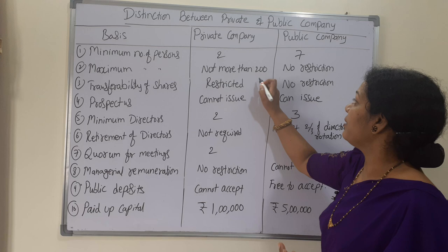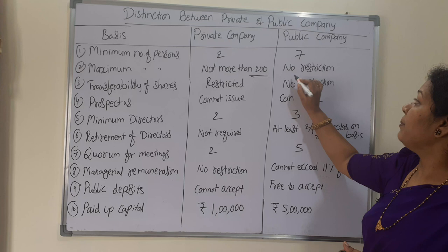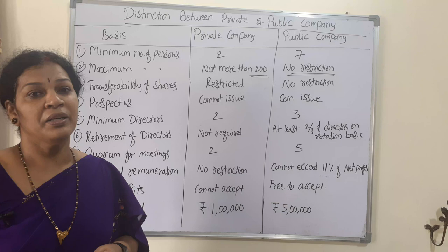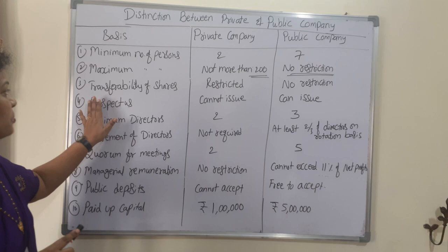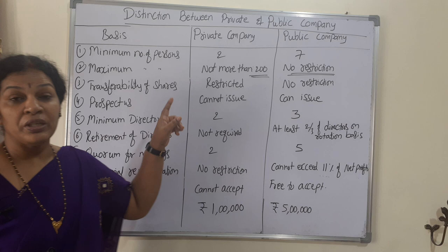The next point is the maximum number of persons. For a private company, the maximum is 200 — it should not cross 200 members. For a public company, there is no restriction; any number of persons can be members of a public company.